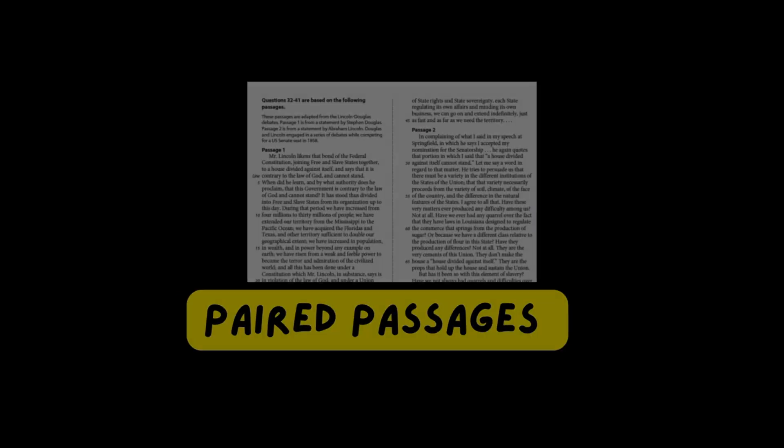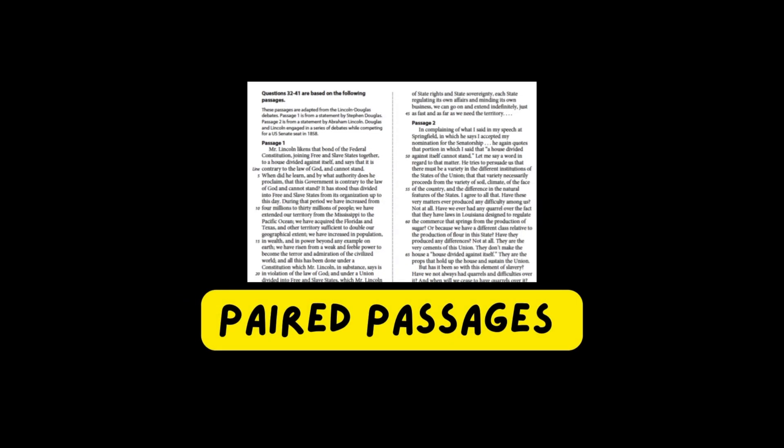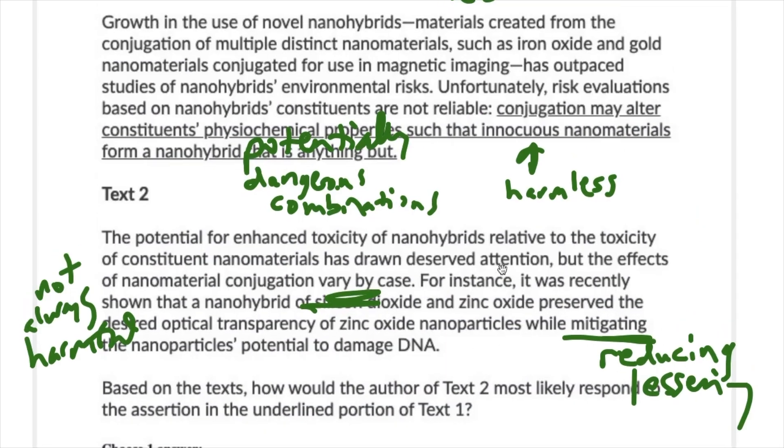Passage one and passage two questions. These questions really trip up a lot of students because it's like two passages in one — and one passage is already enough. What you want to do is read passage one first, then answer the passage one questions. Then read passage two and answer the passage two questions.